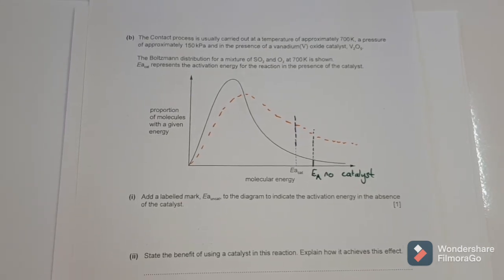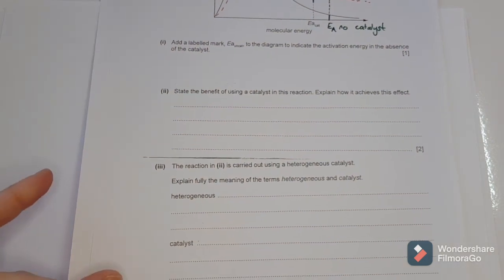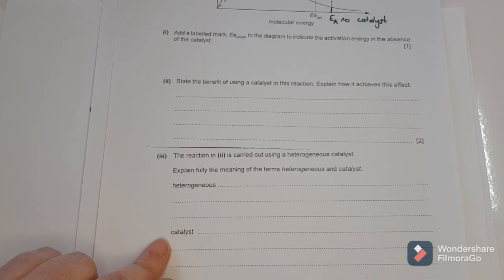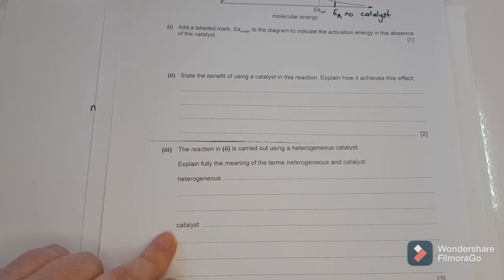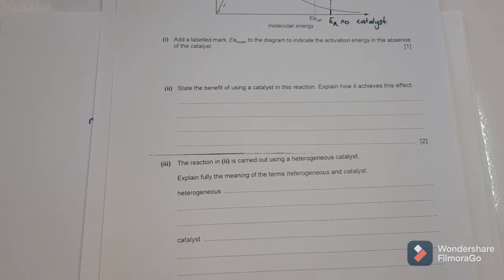Any time you have rates of reaction questions, they will usually involve a Boltzmann distribution curve, or ask you to explain using collision theory, or ask for the meaning of a heterogeneous or homogeneous catalyst. Heterogeneous means the catalyst and reactants are in different phases. The definition of a catalyst is something that speeds up your reaction while remaining unchanged, by lowering the activation energy. That's all you need to know about rates of reactions.